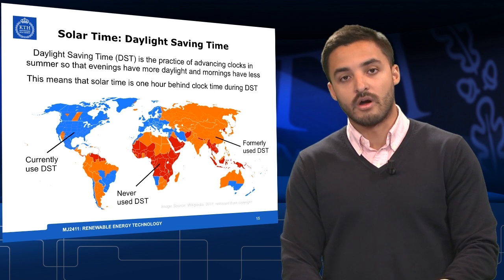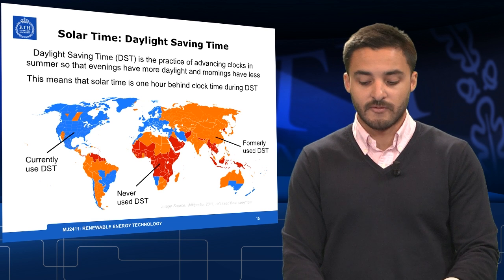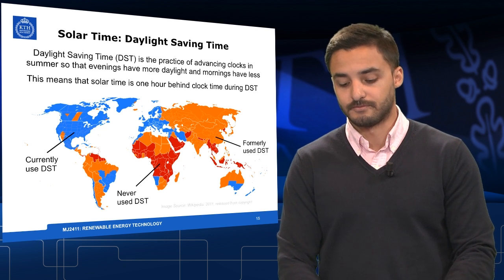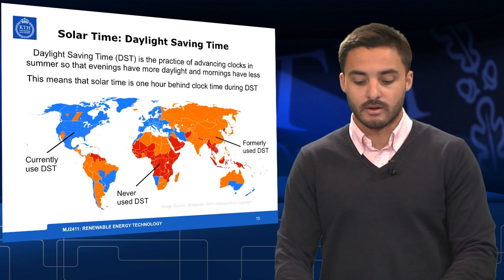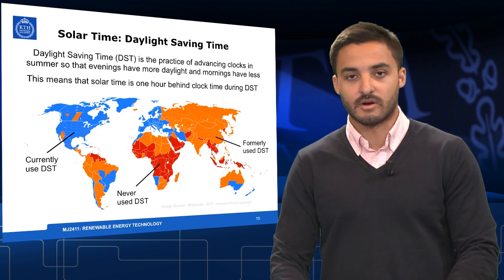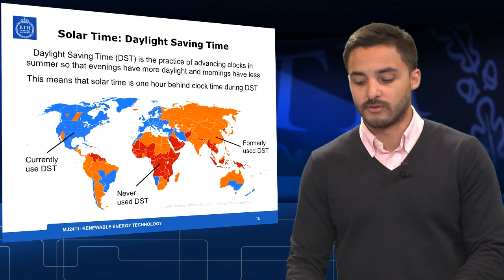Here in this figure you can see where it is used, where it was used before and where it has never been used. Important to notice that a big part of the Western world, where some of the solar calculations are performed, do use daylight saving time.